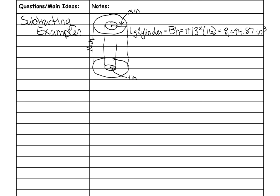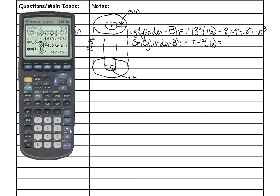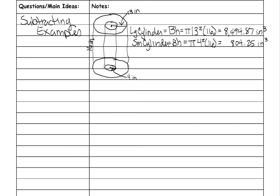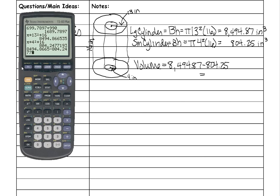Now for the small cylinder: the base is a circle, pi r squared. The radius of the little cylinder is 4 inches, so pi times 4 squared times the height, which is the same: 16. That gives 804.25 cubic inches. To find the total volume between the cylinders, subtract them from each other. Using four decimal places for precision, the answer is 7,690.62 cubic inches.